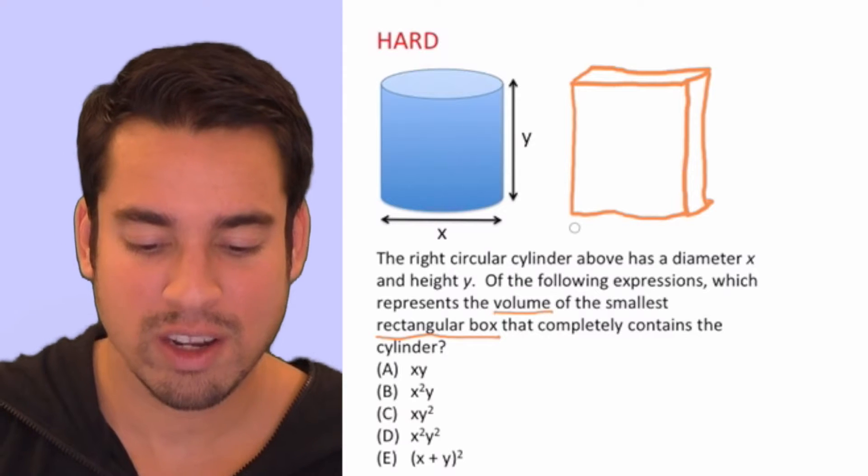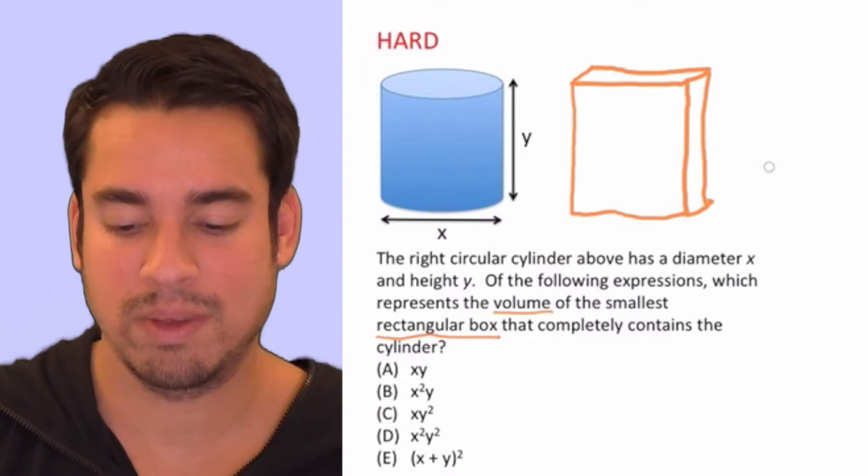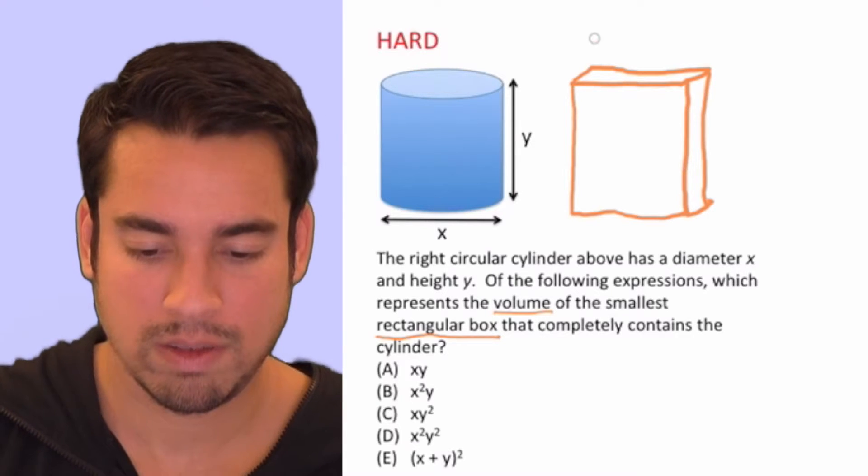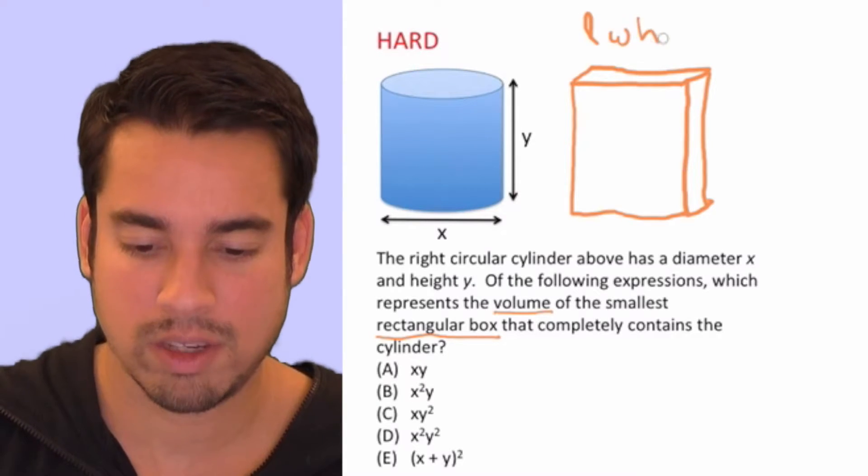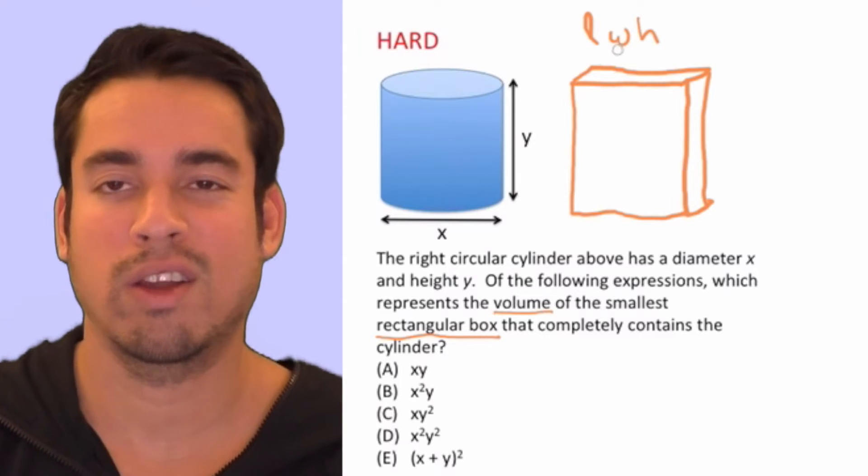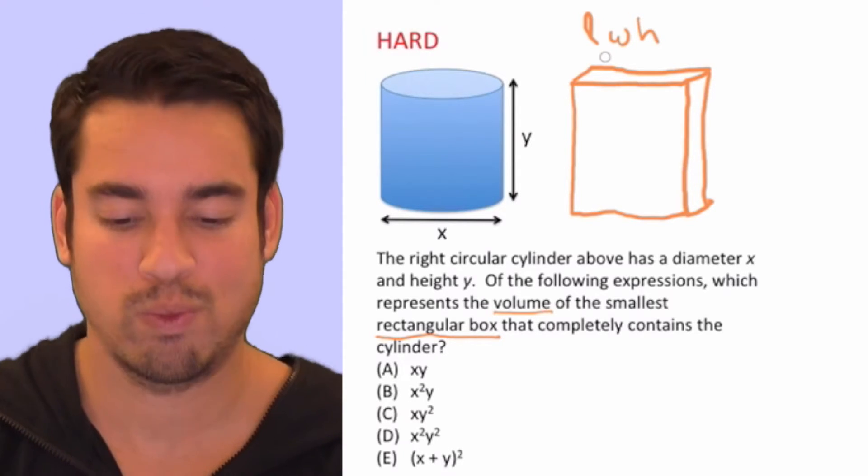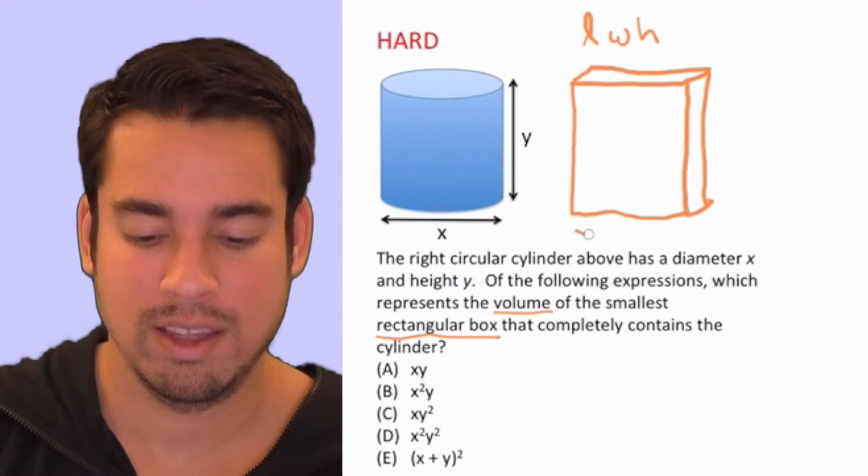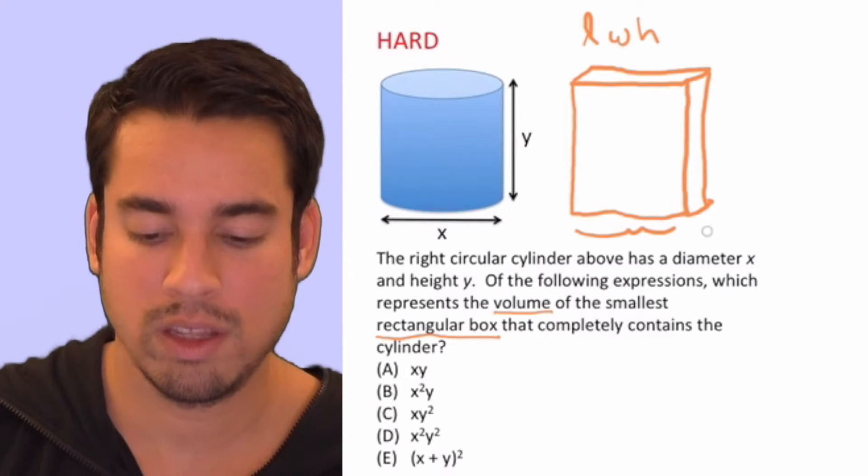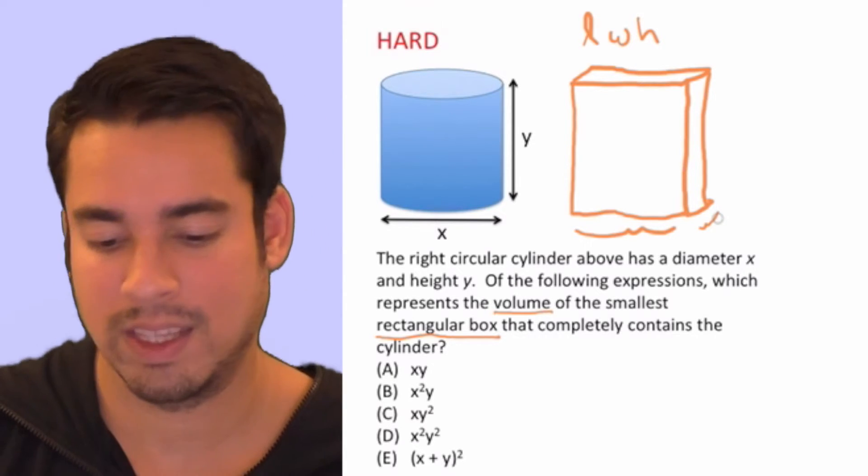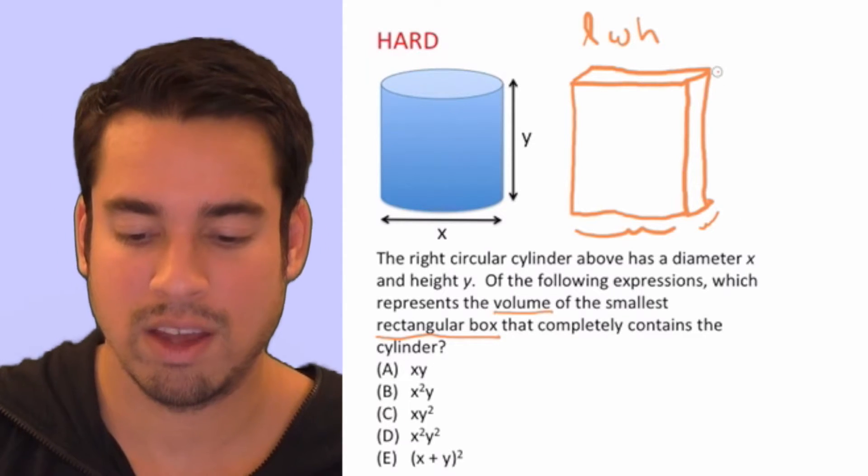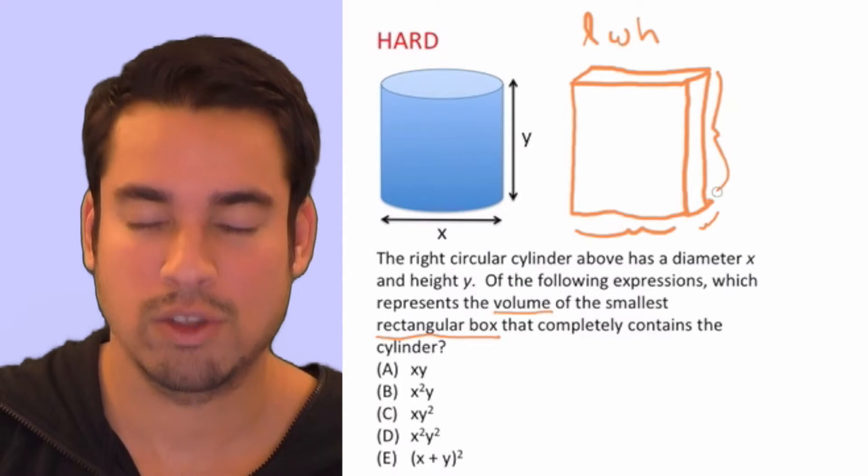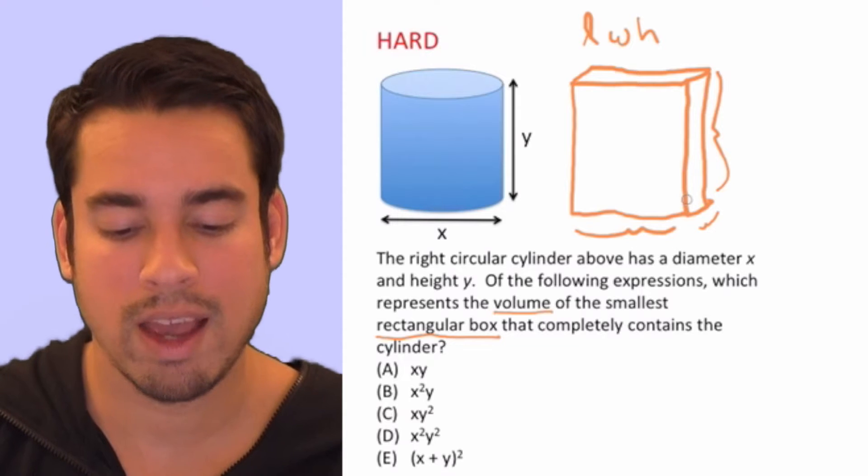Alright, so in order to calculate the volume of a box, it's simply length times width times height. It's kind of like calculating the area of a rectangle but just with one more dimension. So we need to calculate this width, this length or depth, and then this value, the height. So we need to calculate those three things. What do they have to be? Well, let's think about it.